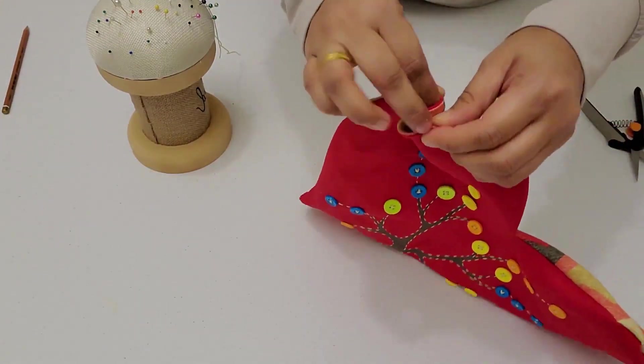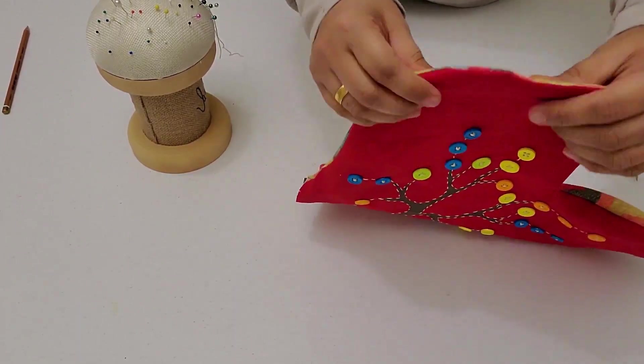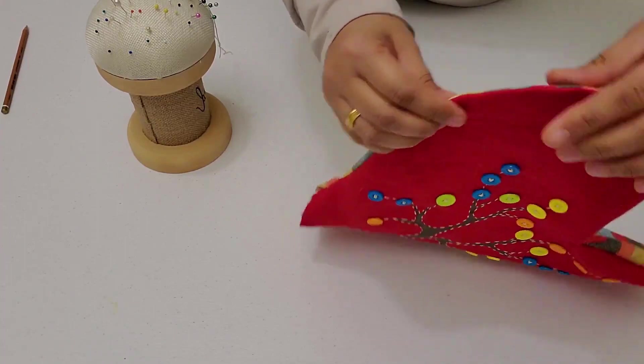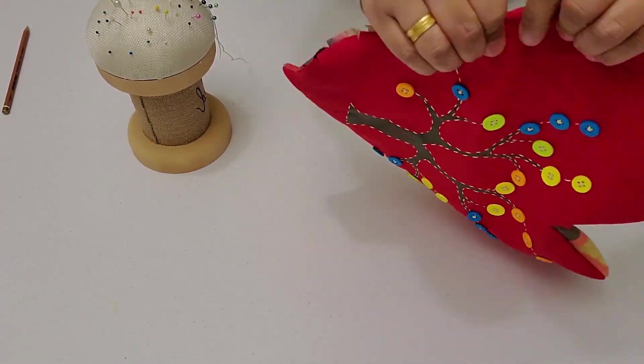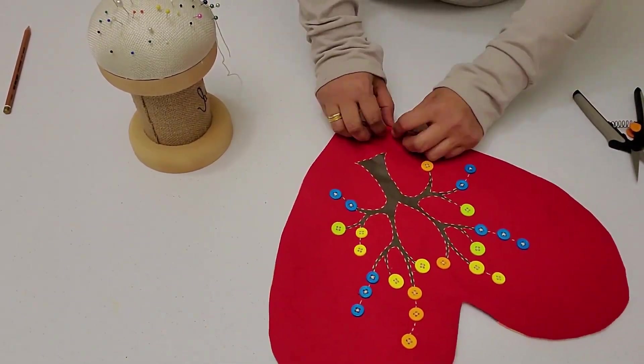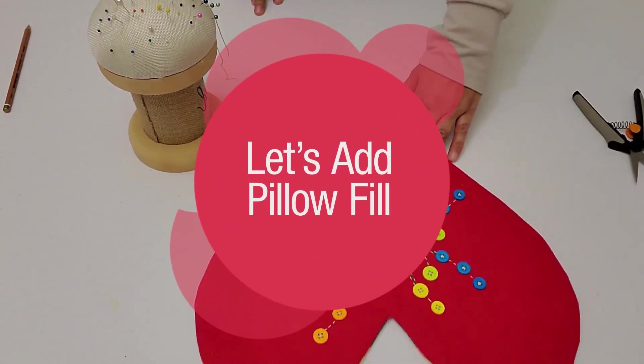You will do this for the whole cushion, all around like this. In between, I will fold like this and make the crease, mainly so it makes this design stay out well. Now it's time to add the pillow fill.